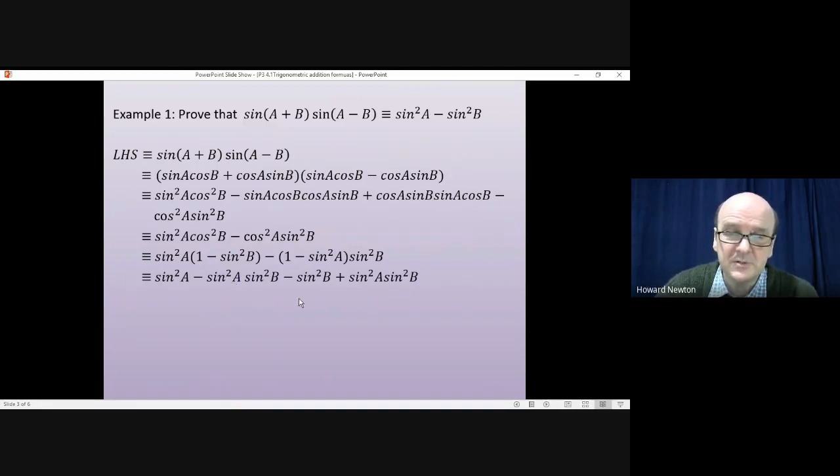And again, these two terms are exactly the same. One is minus, one is plus. They'll cancel each other out. And we are left with what we wanted to get: sin²A take away sin²B. So at that point, we've proved that the left-hand side of the identity is identical to the right-hand side. We've done what we were asked to do, and we could just write QED at this point.